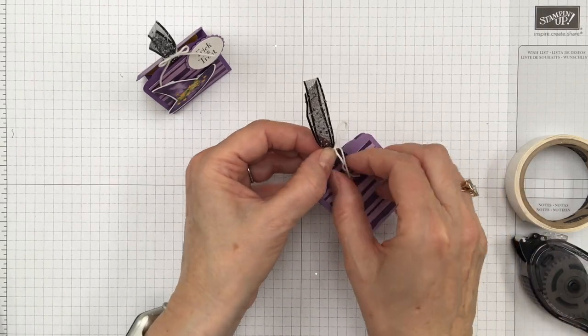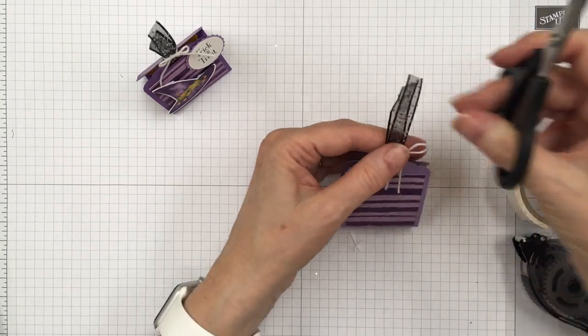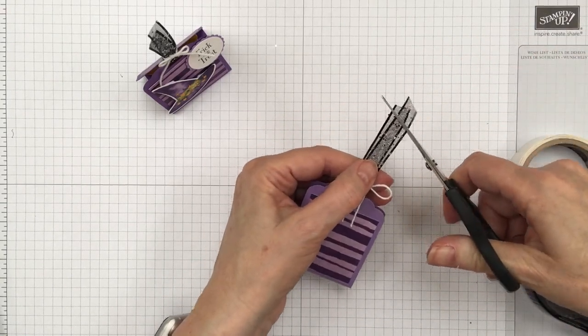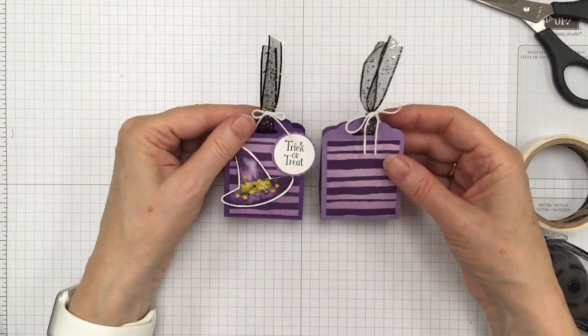Okay. And then trim that. And I think I'll just trim this a little bit. And there we have it. Now we're just going to decorate the front.